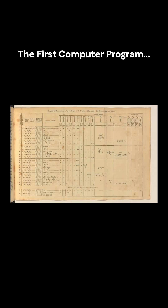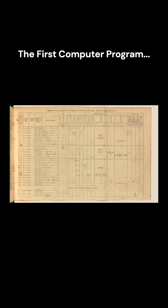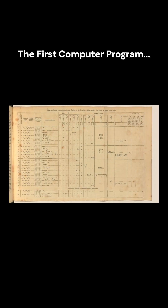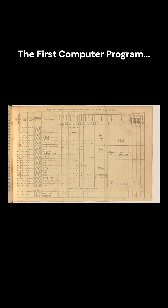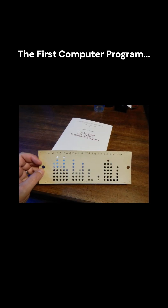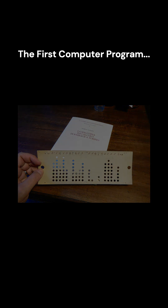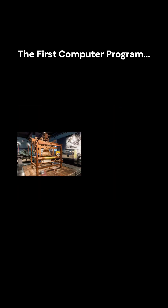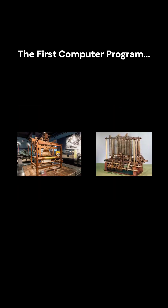Her instructions looked like a flowchart of operations, but written mathematically. These instructions would eventually be translated onto punched cards to control the machine. So the Jacquard loom and the analytical engine represent the very beginnings of programming.